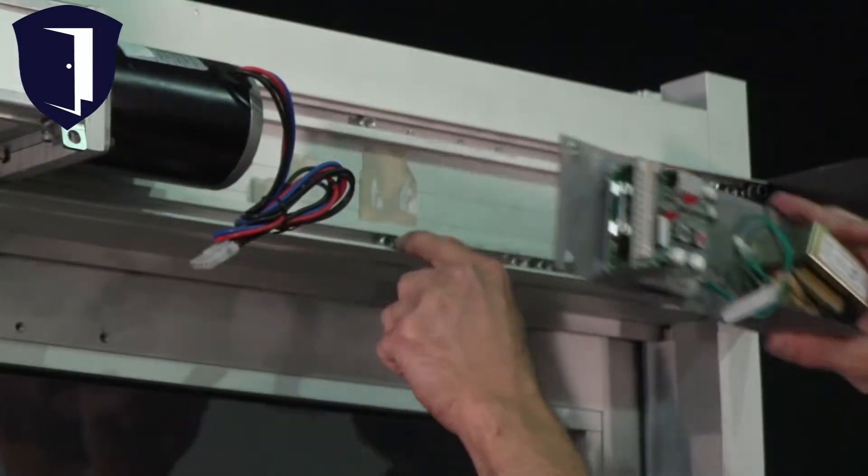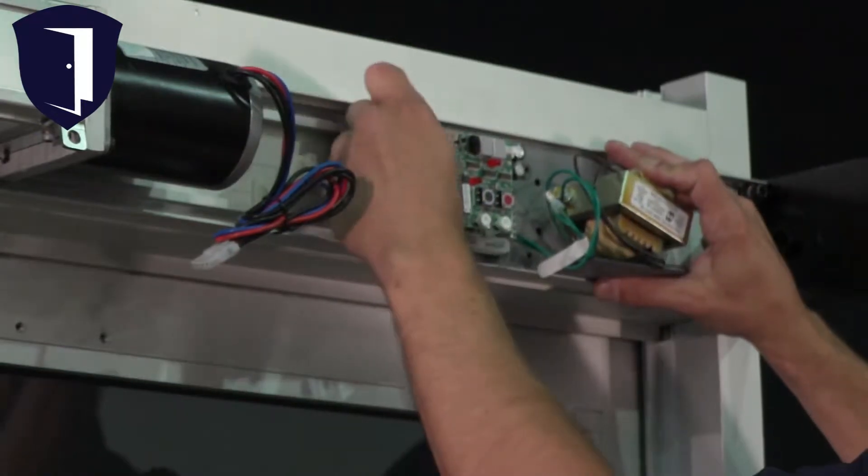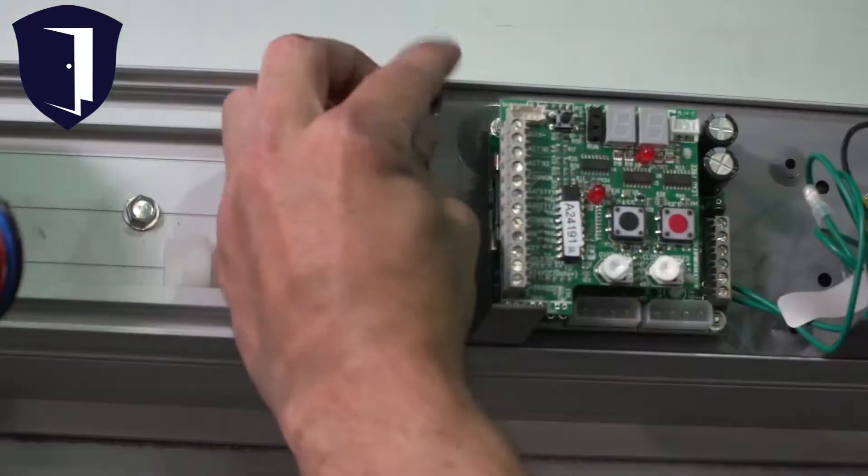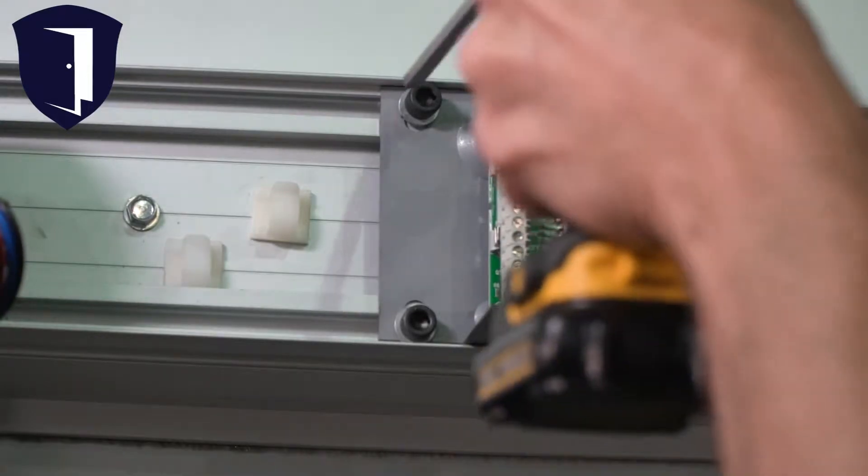Mounting the control panel is even easier. Place the panel in the track next to the gearbox. Move the sliding nuts into position and insert the screws.